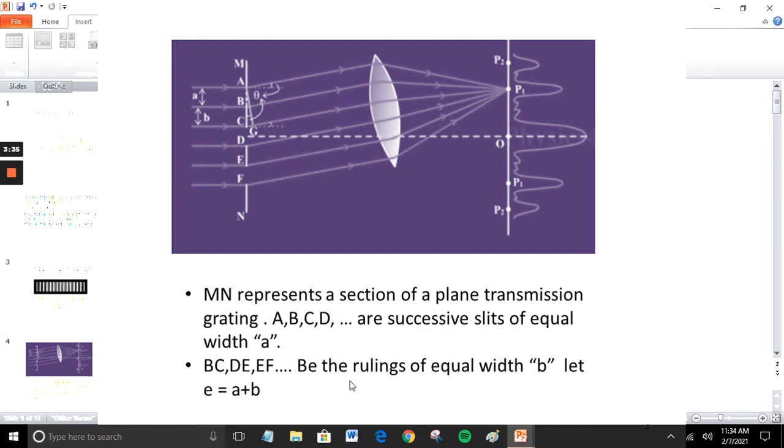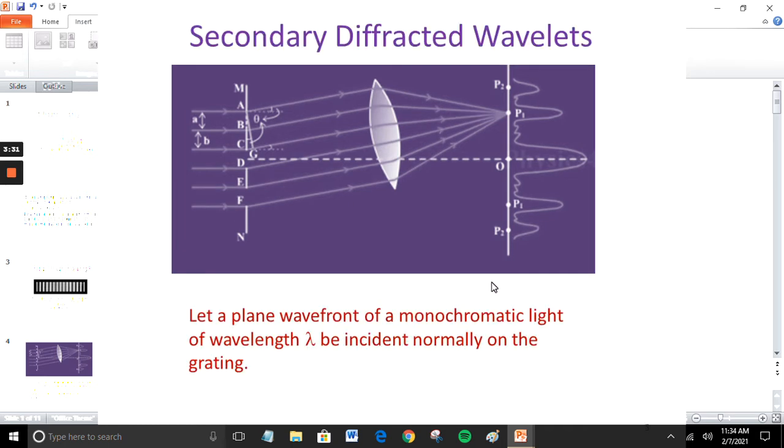Let a plain wavefront of monochromatic light of wavelength lambda be incident normally on the grating. Let us consider the secondary diffracted wavelets which make an angle theta with normal due to the grating.